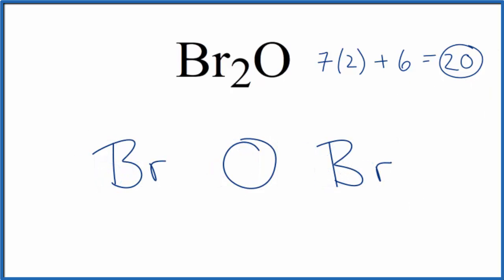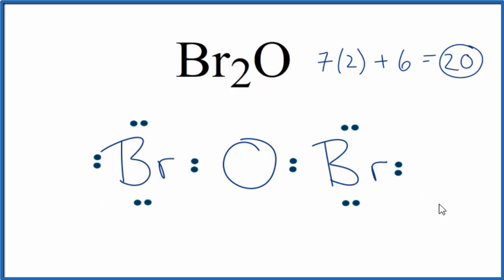So we have 20 total valence electrons. We'll put a pair of electrons between the atoms, and that'll form our chemical bond. Then we'll go around and complete the octet on each of the bromine atoms. So far we've used 16 valence electrons, remember we have 20. So next we'll complete the octet on the oxygen. There's 18, 20, and we're done.